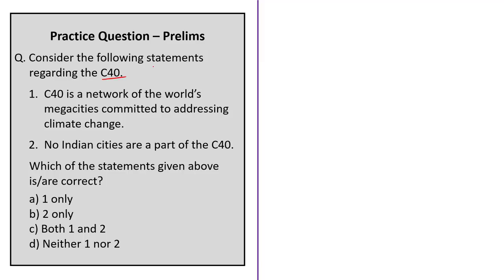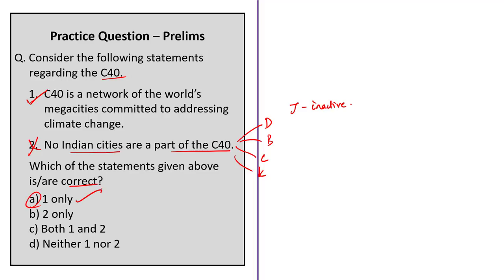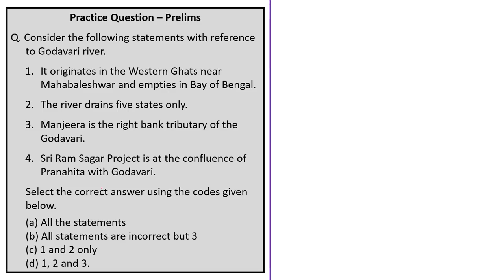Question 4: Consider the following statements regarding C40. Statement 1 is correct. Statement 2 states that no Indian cities are part of C40 — this is wrong, since Delhi, Bengaluru, Chennai, and Kolkata are part of the C40 network and Jaipur is a temporarily inactive member. Correct answer: Option A, statement 1 only.